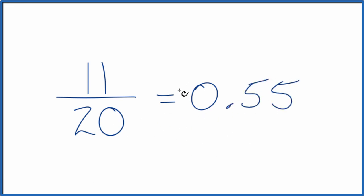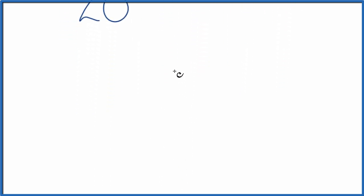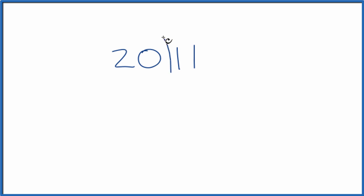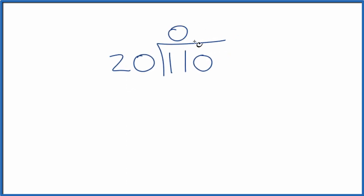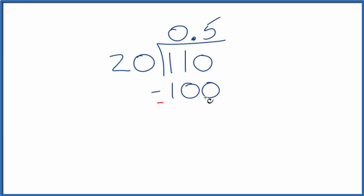The other way is we could do this longhand. We could take 11 and divide it by 20. So we write 11. We want to know how many times 20 goes into 11. 20 doesn't go into 11, so let's make this 110 and then put a zero with a point after it. Now we could say 5 times 20, that's 100, and then subtract and we'll get 10.